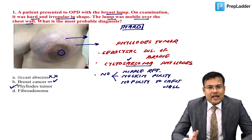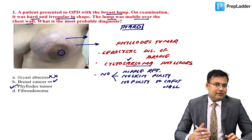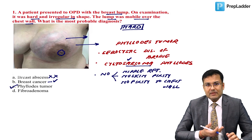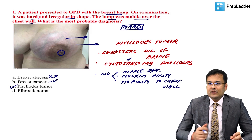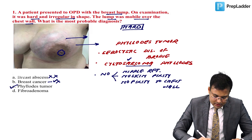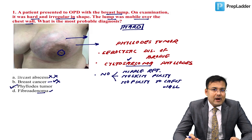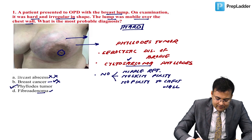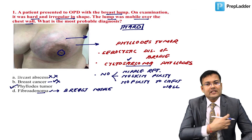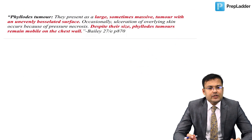Breast cancer can present similarly, but with such a large lump, advanced malignancy would show nipple retraction or deviation and fixity to the chest wall — so it's ruled out. Fibroadenoma is ruled out because the lump is firm and mobile, seen in young females aged 16–25, also known as breast mouse due to high mobility. The correct answer is Phyllodes tumor.